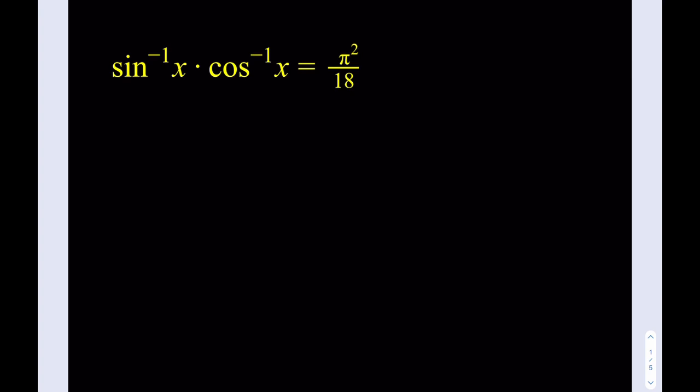So how do we solve this problem? Well, as always, we're going to take advantage of a very powerful method called substitution. But before we use substitution, we need to relate sine inverse and cosine inverse — and they are related. Sine inverse of x plus cosine inverse of x is equal to pi over 2.